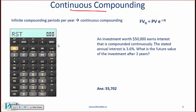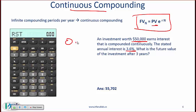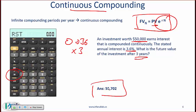For continuous compounding, you need to know this formula: future value equals present value times e to the power of R times n, where R is the interest rate in decimal and n is the number of years. On the calculator, for example with R = 0.036 and n = 3: compute 0.036 times 3, then press second and e-to-the-x, then multiply by $50,000 to get your answer.